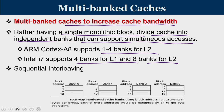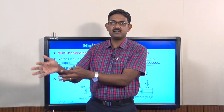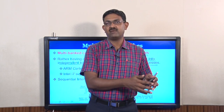Looking at the diagram: imagine 16 sets in a cache. Sets 0, 4, 8, and 12 belong to bank 0; sets 1, 5, 9, and 13 belong to bank 1; and similarly the remaining sets are divided. Rather than keeping all 16 sets in one place, we divide the entire set into 4 groups: set 0, 1, 2, 3 form one group; then set 4, 5, 6, 7 form another, and so on.